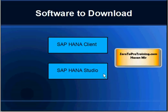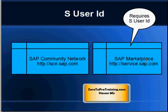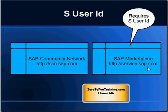We will be downloading two pieces of software: SAP HANA Client and SAP HANA Studio. The two files are available from two sources: SAP Community Network or SAP Marketplace. Community Network can be visited at http://scn.sap.com and Marketplace at http://service.sap.com. SAP Marketplace is not accessible to everybody — it requires an S user ID, which starts with the letter S followed by a 10-digit number, and is only given to those who have purchased software from SAP or are certified professionals.